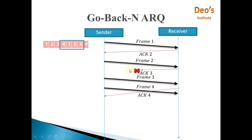This is how, if one acknowledgement gets lost, the sender need not resend the frame — unlike the first case in stop-and-wait where a lost acknowledgement requires the frame to be resent. This is how go-back-N works.